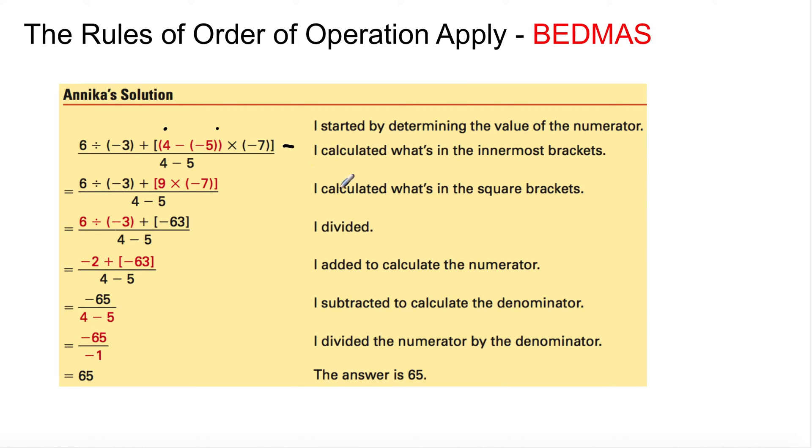Then I calculated what's in the square bracket. So now you're working on this. So 9 times negative 7. You have only one negative there. Unlike terms, it becomes negative 63. So 9 times negative 7 becomes negative 63.